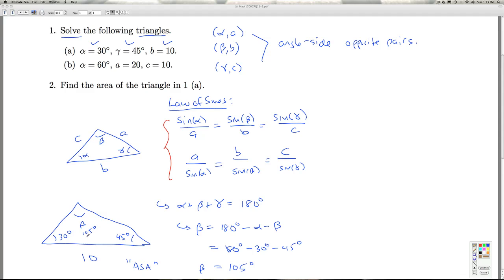Now I've got an angle side opposite pair, I can go off and use law of sines. So what's left to find is the length of the side opposite alpha, A, and the length of the side opposite gamma, C.